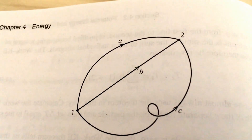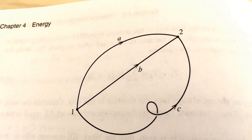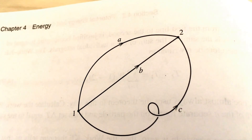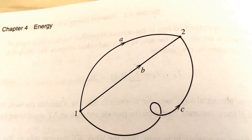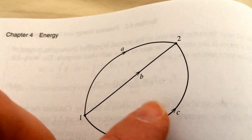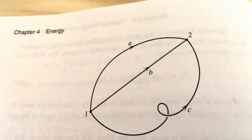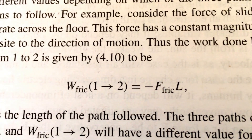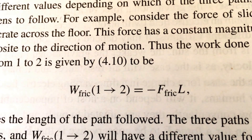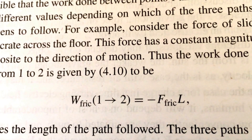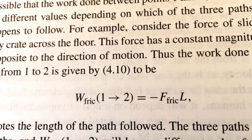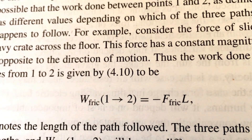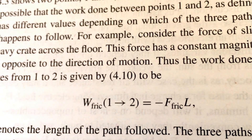For a conservative force, the line integral will only depend on point 1 and point 2. By contrast, a non-conservative force will do different amounts of work depending on the trajectory taken. For example, the force of friction would do a lot more work along trajectory C than along trajectory B, because trajectory C is a lot longer. Here, L represents the length of the trajectory — how long a path the particle took — and the work will be bigger if L is bigger.